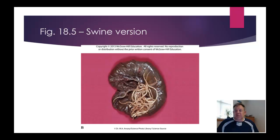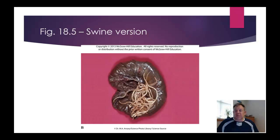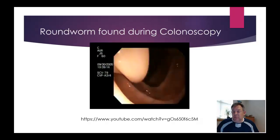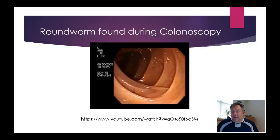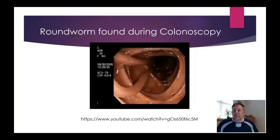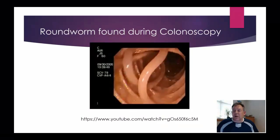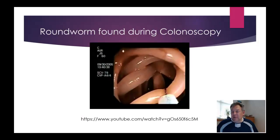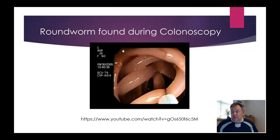I found a cool video — this is a colonoscopy where they found a round worm inside a human's colon. You can see the ridges of the colon and the round worm just hanging out doing its thing. At some point in the video they actually capture it and start pulling it out — they lasso it and pull it right out. As I said, potentially 1.27 billion people are infected with this.